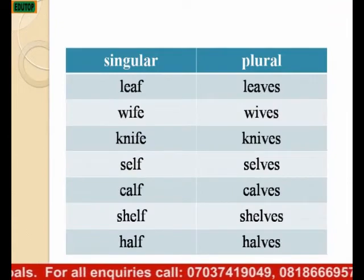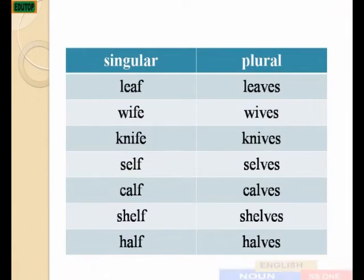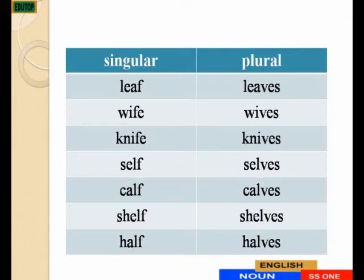Nouns that end in LF or FE change to VES. Examples: leaf becomes leaves, wife becomes wives, knife becomes knives, self becomes selves, calf becomes calves, shelf becomes shelves, half becomes halves.